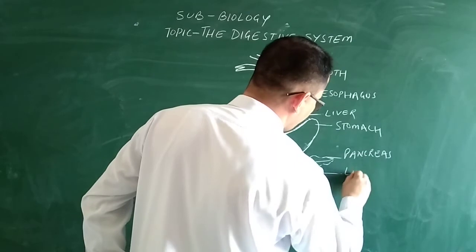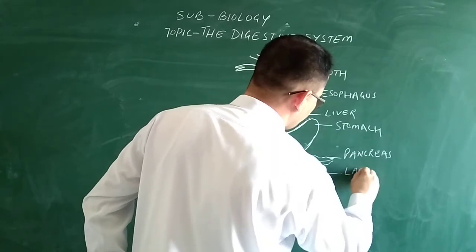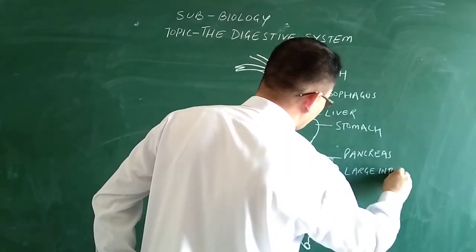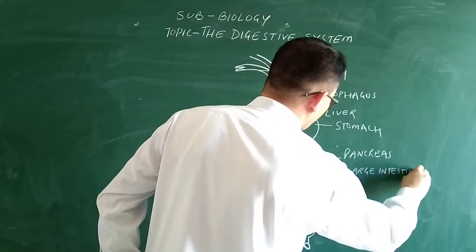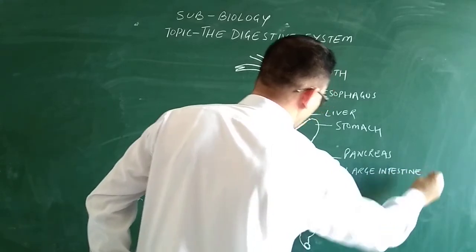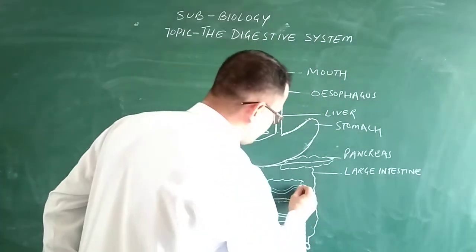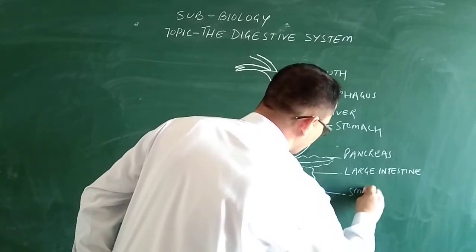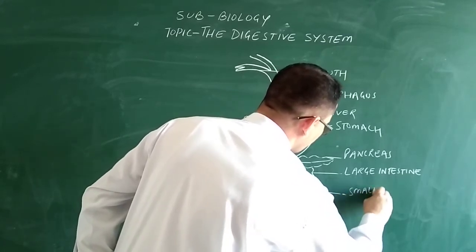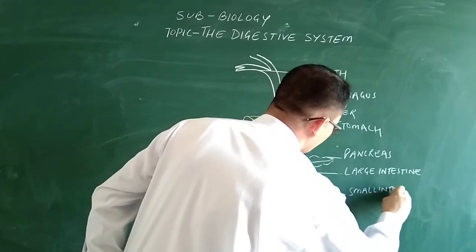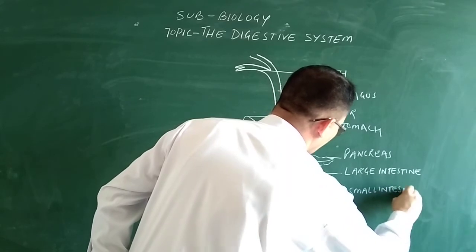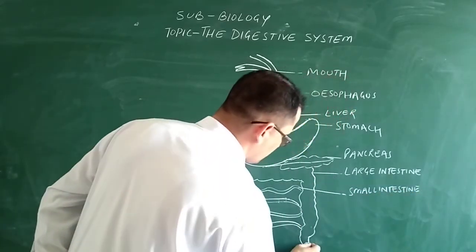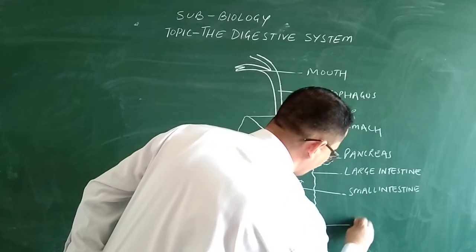You can also see the large intestine. This inner coiled tube is the small intestine, and this is the rectum.